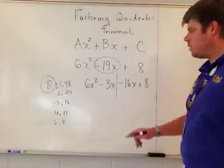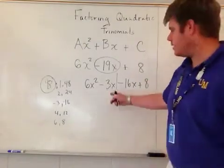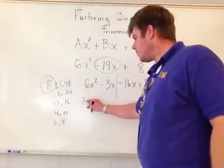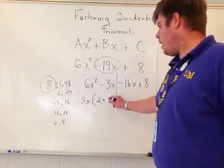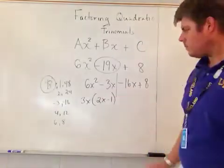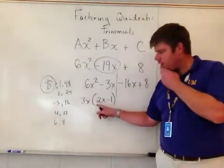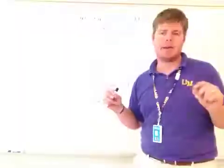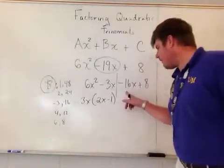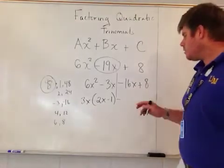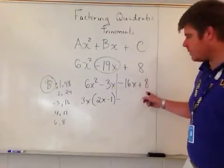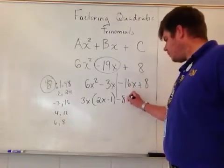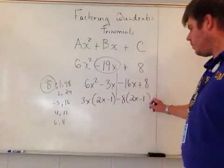I take the GCF out of 6x² - 3x, which is 3x, leaving 2x - 1. Over here, if this is positive 2x - 1 and I have a negative in front, I must factor out a negative. So I factor out negative 8, getting negative 8 times (2x - 1).